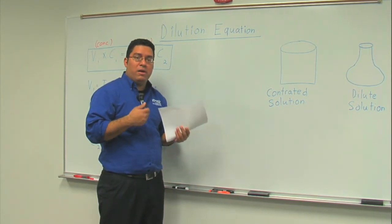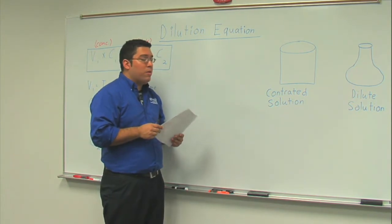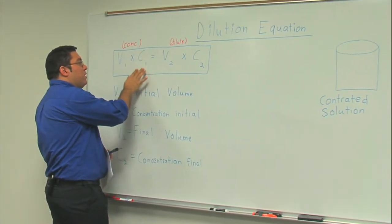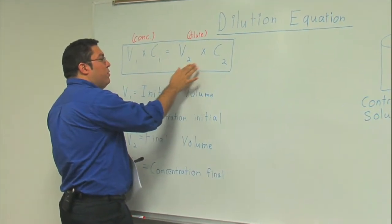The formula is V1 times C1 is equal to V2 times C2. You have to understand what these variables mean.